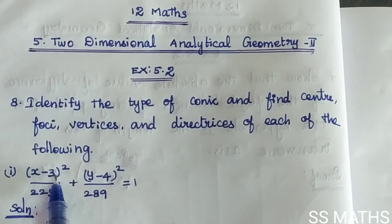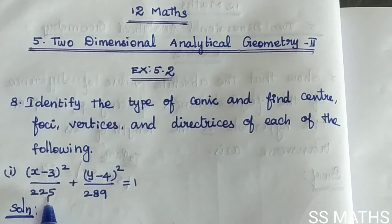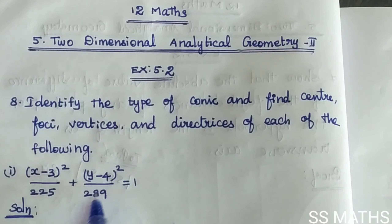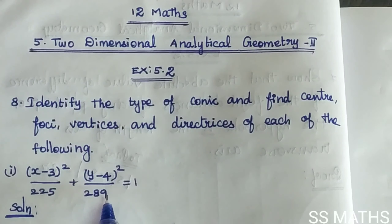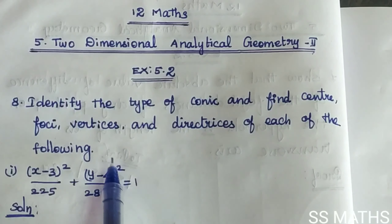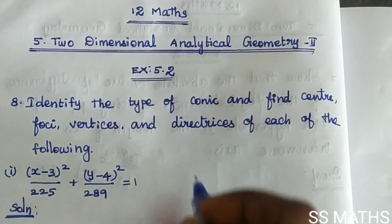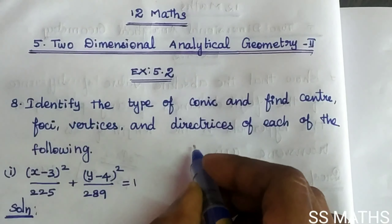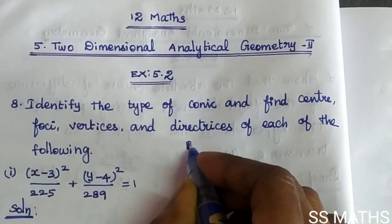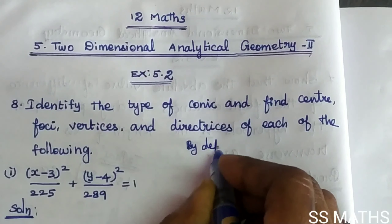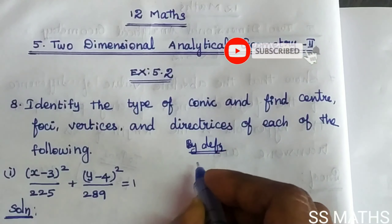The equation is: (x minus 3) whole square divided by 225, plus (y minus 4) whole square divided by 289, equal to 1. First, find the type of conic by definition.